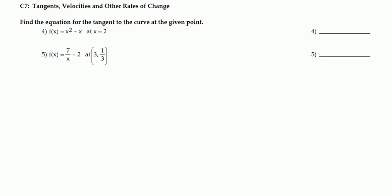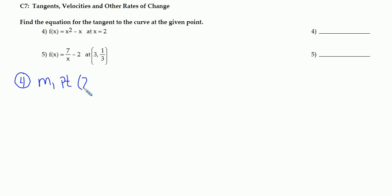Concept 7: we're asked to find the equation for the tangent line to the curve at the given point. For number 4, anytime I'm asked for an equation of a line, I realize I need a slope and I need a point. They provided me with half the point — they gave me the x value as 2. I need to find the y value, which is just what I get when I plug 2 in for x. I'm going to get 4 minus 2, or 2, so it's the point (2, 2).